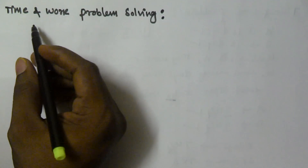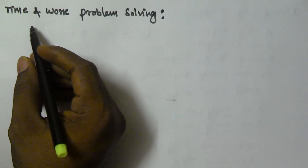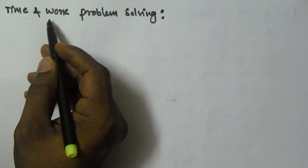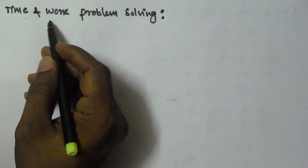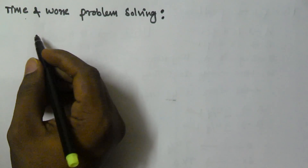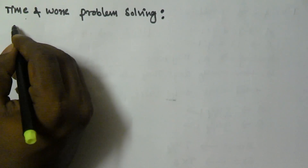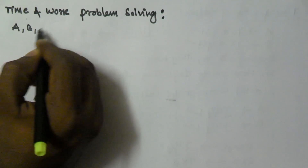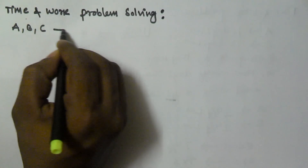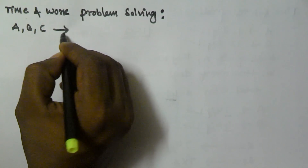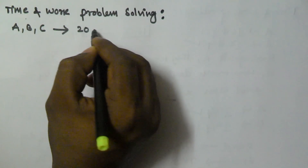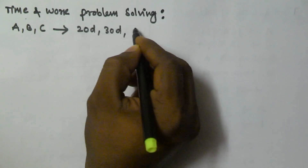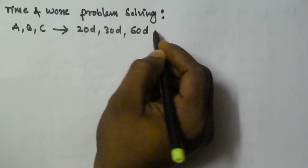Hello friends, in this video I am going to show you another type of problem related to time and work and how to solve the problem. So let us consider there are 3 persons: A, B and C. They are going to finish the same task in 20 days, 30 days and 60 days respectively.